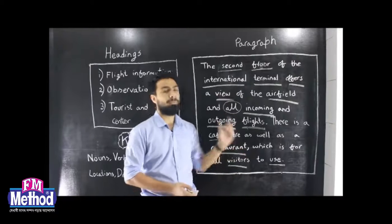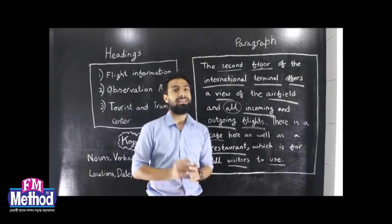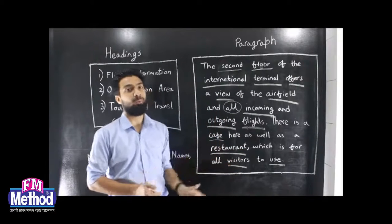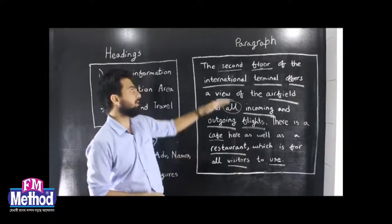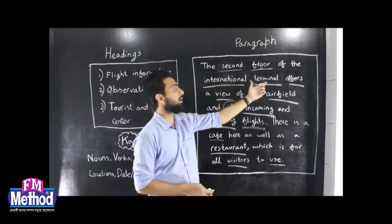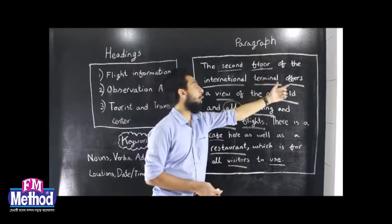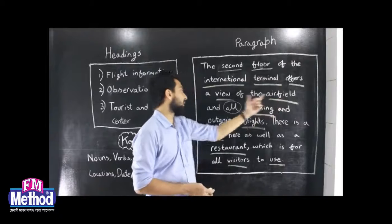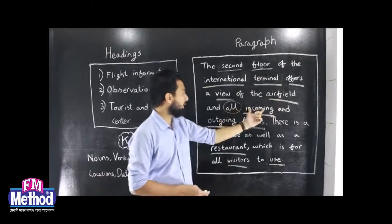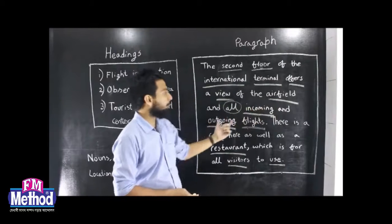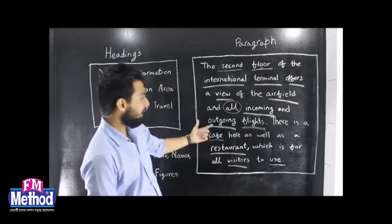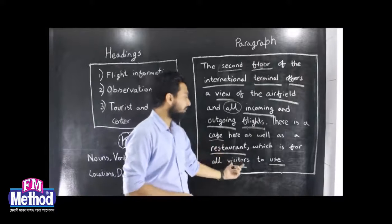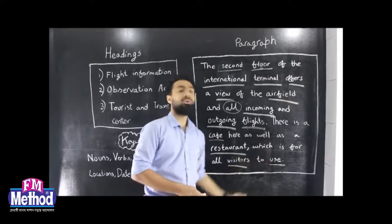Now we try to understand what the message is. The keywords tell us: second floor, international terminal, offers a view of the airfield, all incoming and outgoing flights. Second sentence: cafe, restaurant, visitors — that's what we get from the keywords.